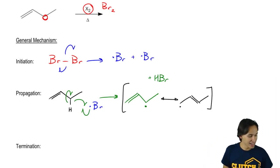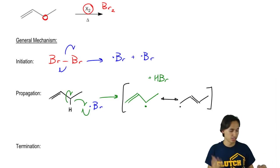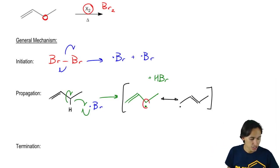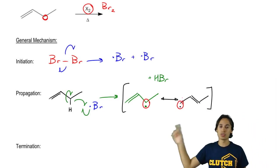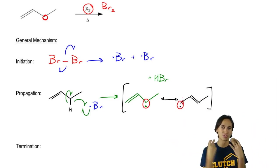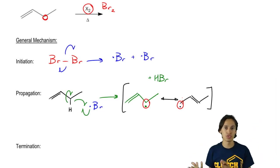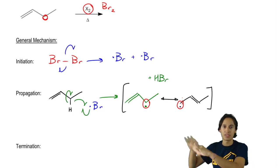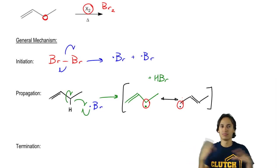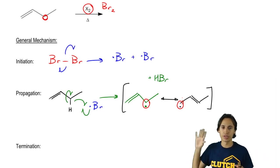The resonance structure actually looks like this. What that means is that now my Br that's going to continue in the propagation stage can attach both there and there. It's going to be able to attack both of those carbons because the radical is hybridized between those two. Remember that resonance structures, it's not an equilibrium. It's a mathematical statistical average of where that radical is.